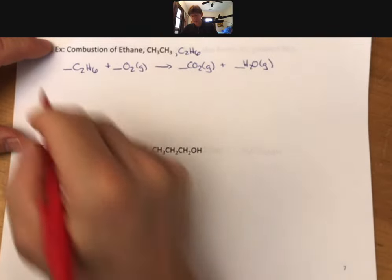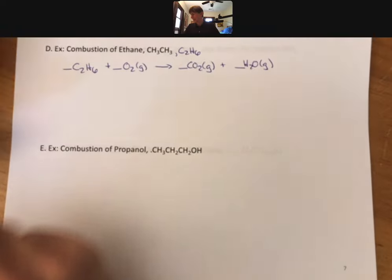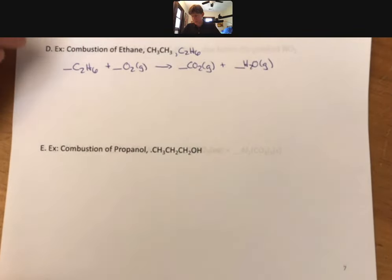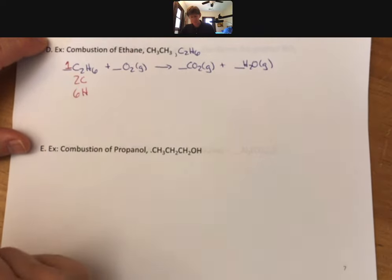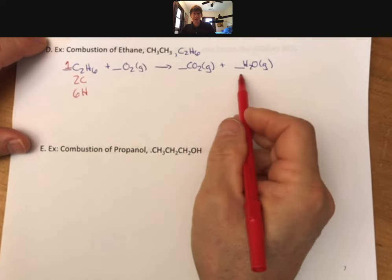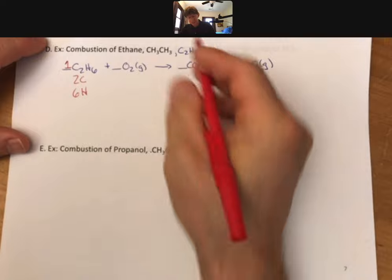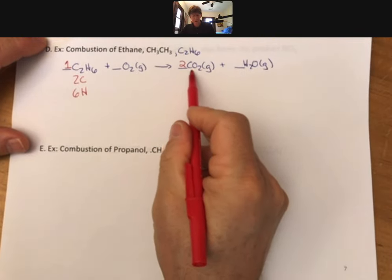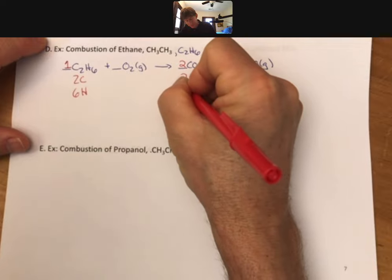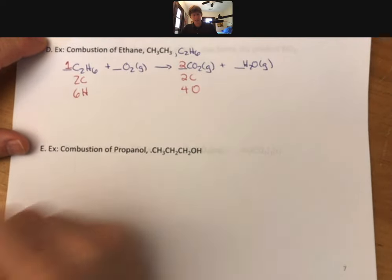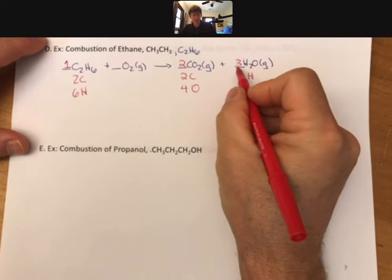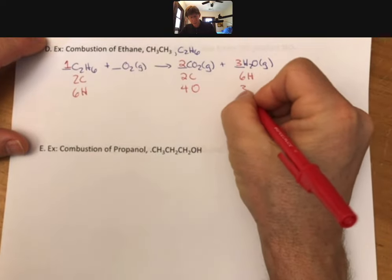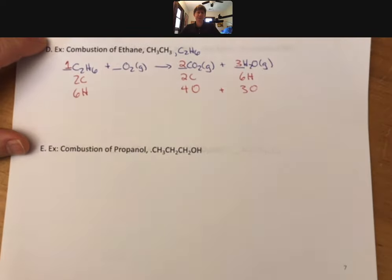I'm going to put a one coefficient in front of the most complex looking thing. Now again I only have two carbons here and six hydrogens. Next it will be two here for two carbons. That gives me four oxygens as well. Six hydrogens means I have to have a three here for six hydrogens because three times two is six and now I get three oxygens.